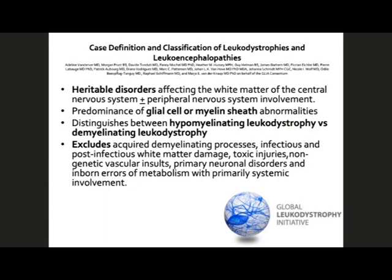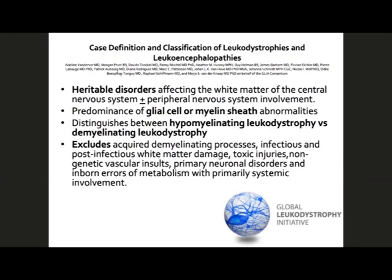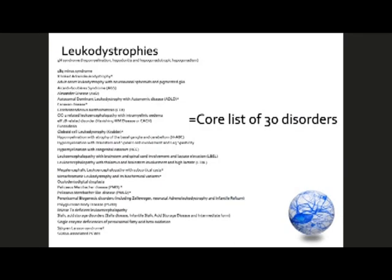Before we start speaking about how to diagnose leukodystrophies, it's important to identify what we think leukodystrophies are. Several years ago, a number of my peers got together to define in epidemiologic case description format what might be considered a leukodystrophy. The consensus was that leukodystrophies were heritable disorders affecting the white matter of the central nervous system and peripheral nervous system, requiring a predominance of glial or myelin-sheath abnormality. In 2015, this left us with a list of 30 disorders, and new disorders are being identified daily, but the case description has not been updated.